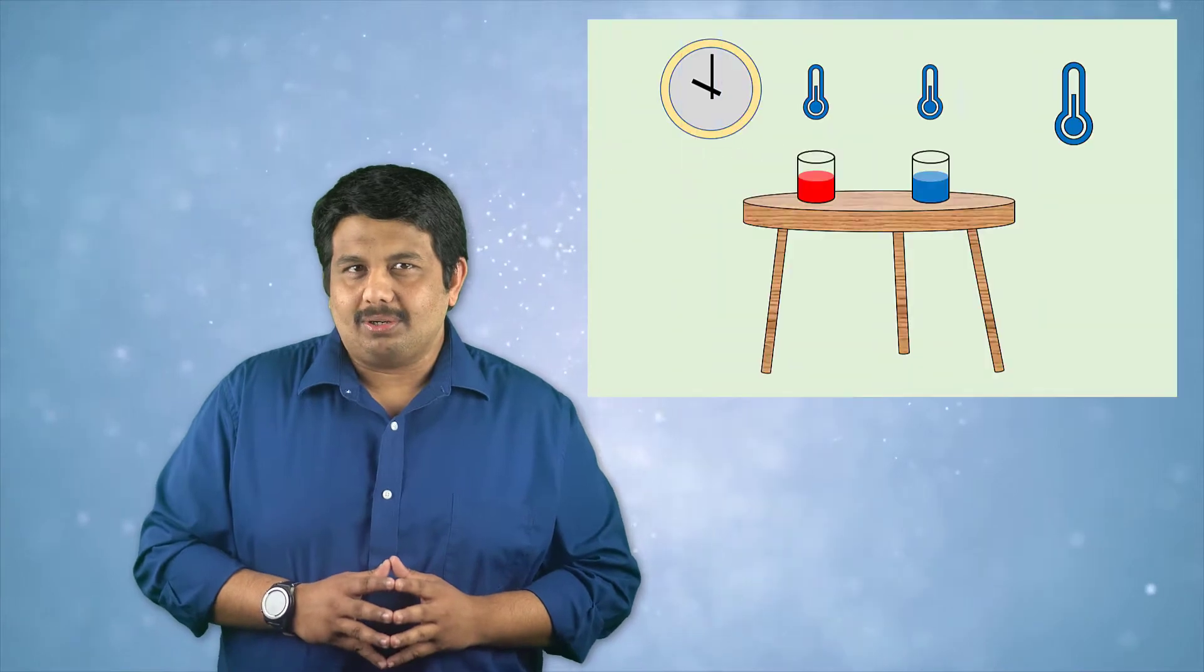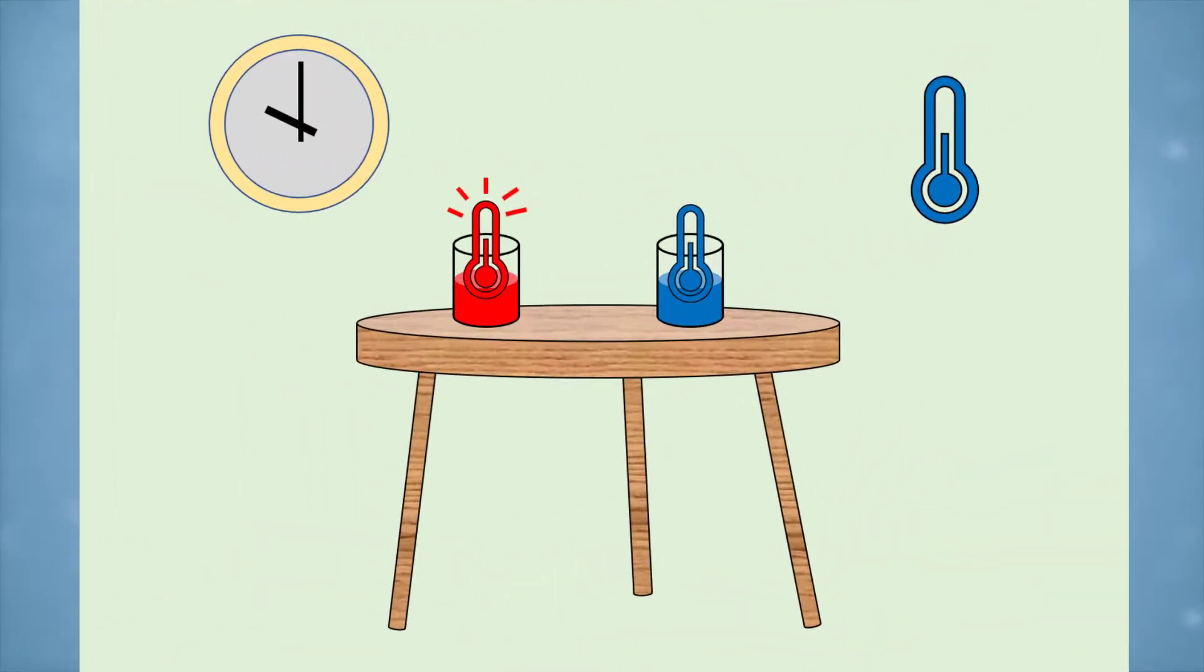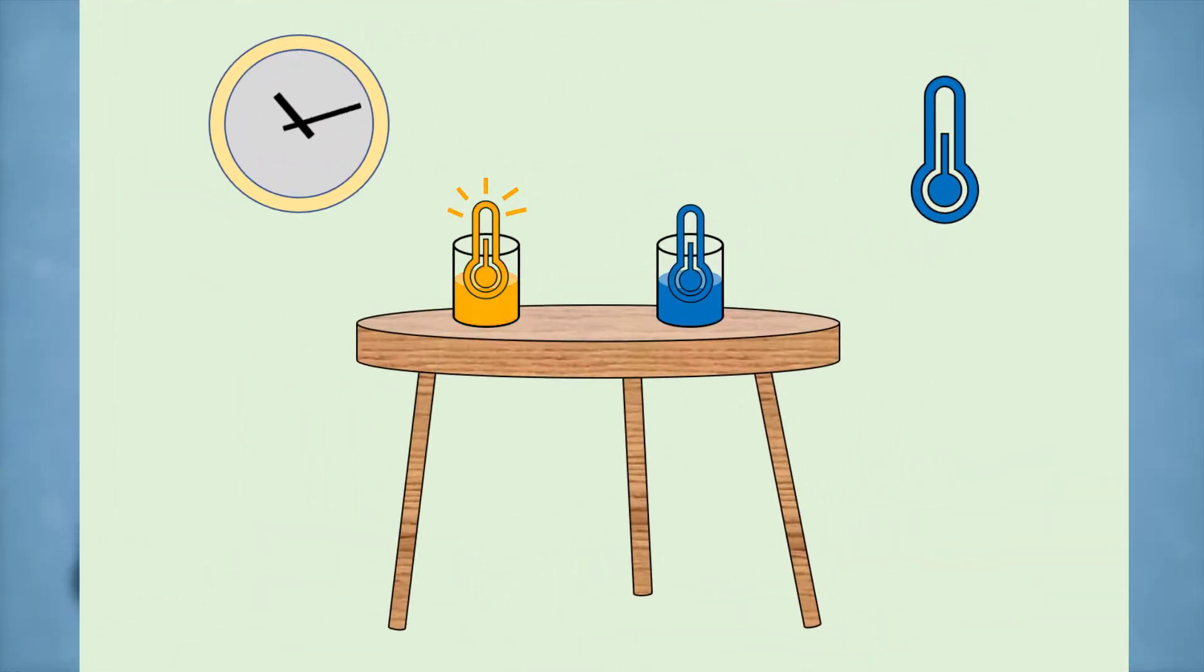Take a glass of cold water and a glass of hot water and place them next to each other on a table. After some time, if you measure the temperature of the water in the two glasses and that of the room, you will notice that it is the same. That is, they are in thermal equilibrium. This is the basic essence of the zeroth law of thermodynamics.